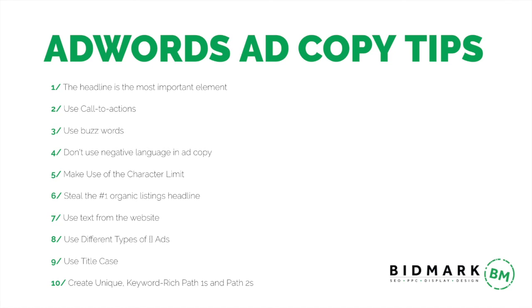That's my top 10 tips. To recap: first, focus on the headline — it's the most important element. Second, use call to actions. Third, use buzz keywords. Fourth, avoid negative language. Fifth, make use of the character limit. Sixth, look at organic listings headlines and descriptions. Seventh, use text from your website. Eighth, use advanced features like keyword insertion. Ninth, use title case. And tenth, create unique keyword-rich path ones and path twos. If your ad copy ticks all these 10 boxes, I almost guarantee it will be improved as a result. Let me know how you get on, and leave any questions in the comments.